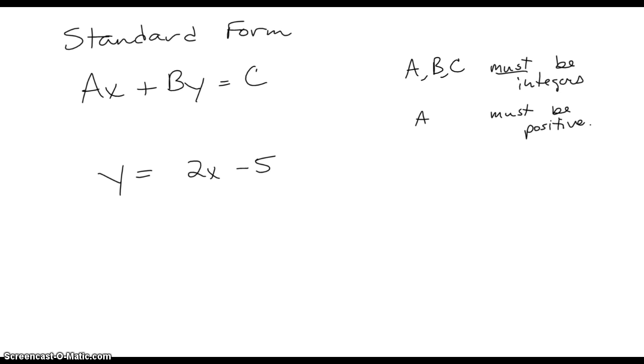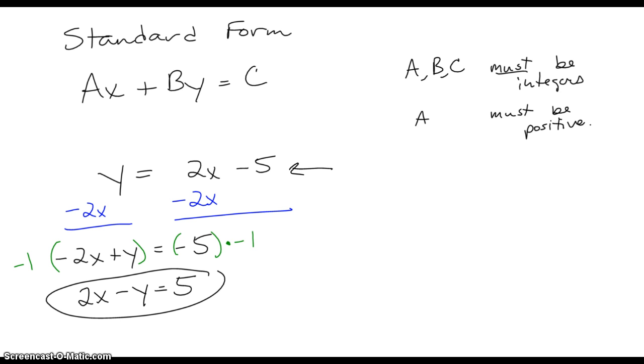Well, now, in order to move the 2X to the left, we have to subtract 2X from both sides. And let's see what that gets us and why this is harder. Now we've got negative 2X plus Y equals negative 5. Again, our A, B, and C are all integers, but we've got the additional problem, the new problem here that our A coefficient is negative. So what we're going to do to make it positive is multiply both sides of our equation by negative 1. As long as we do that to both sides, it's okay. What we end up getting when we distribute our negative 1 is 2X minus Y equals positive 5. Notice how in order to make the 2 positive, we had to change the signs in front of everything else. So this is the correct standard form of this equation.